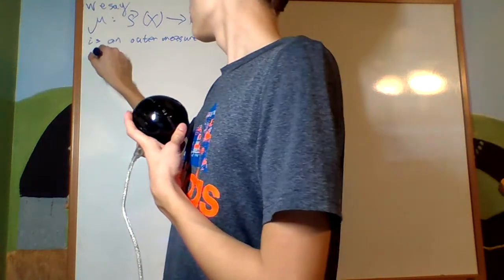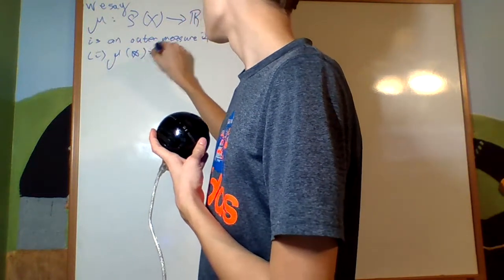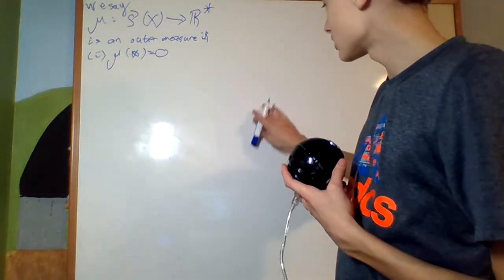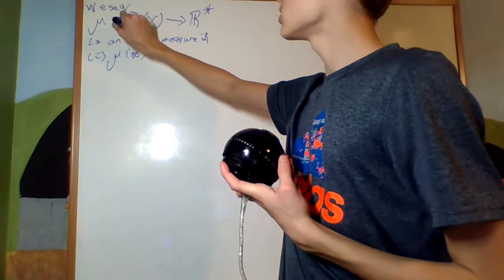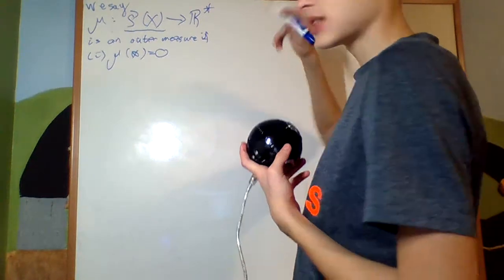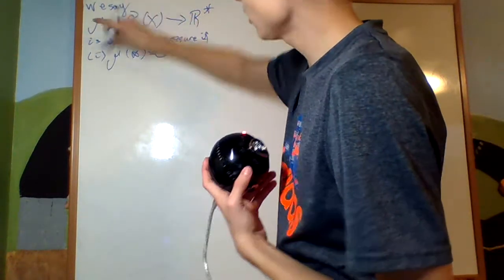If first condition, mu of the empty set is zero. Intuition behind this? Well, same for a normal measure. And note that it doesn't take in things from a specific set of subsets. It takes it in from a general subset.